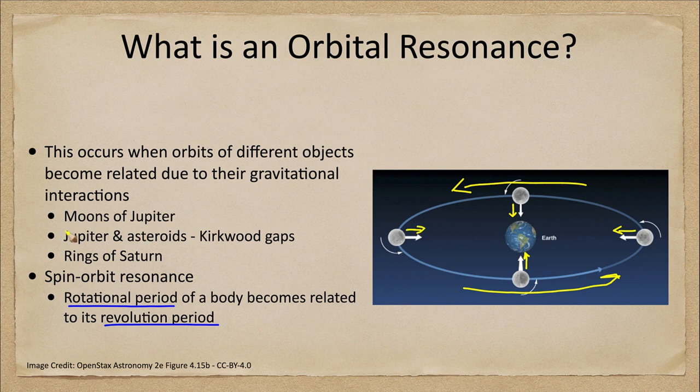This is not confined just to our moon — we see it with other moons in the solar system. We actually see a double case of this with Pluto. Pluto and its large moon are completely locked together, where Pluto's moon keeps one face toward Pluto and Pluto keeps one face toward its moon.